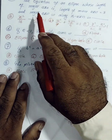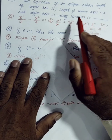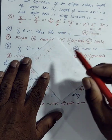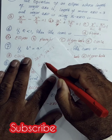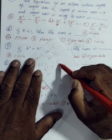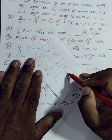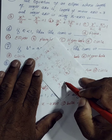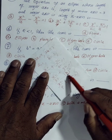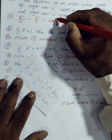The fifth MCQ: find the equation of an ellipse whose length of major axis 2A = 4 and length of minor axis 2B = 3, with the major axis along the x-axis. So A = 2 and B = 3/2. Using the formula x²/A² + y²/B² = 1, we get x²/4 + y²/(9/4) = 1, which simplifies to x²/4 + 4y²/9 = 1. So option B is correct.